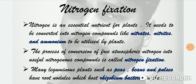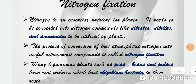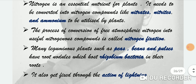Nitrogen is both important and essential as a nutrient, but it cannot be directly used by plants. It needs to be converted into nitrogen compounds like nitrates, nitrites, and ammonium to be utilized by plants. The process of conversion of free atmospheric nitrogen into useful nitrogenous compounds is called nitrogen fixation.